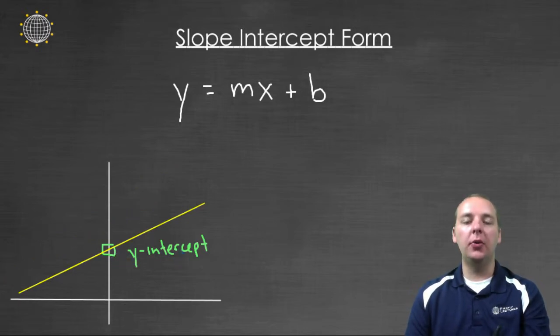And as I drew a little while ago, you can have different lines that have the right y-intercept, but may not have the right slope. And so having both of these guys in conjunction with one another, that's going to uniquely identify a line.